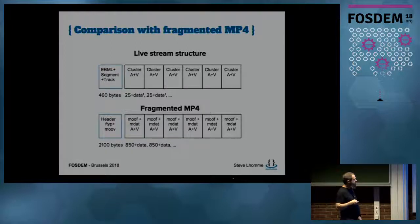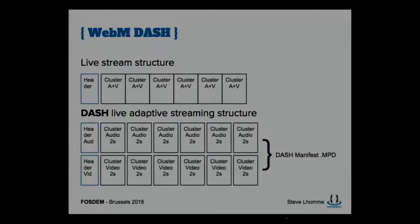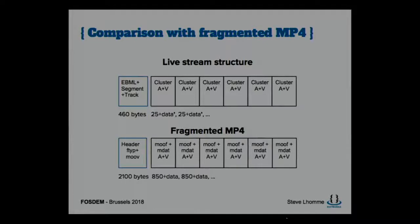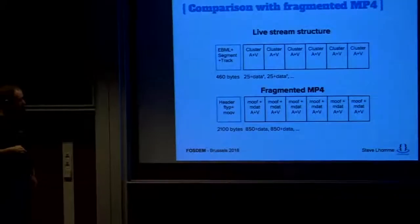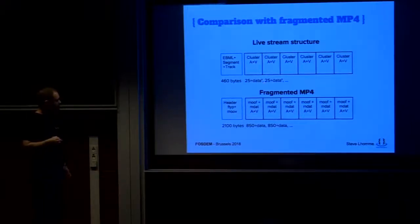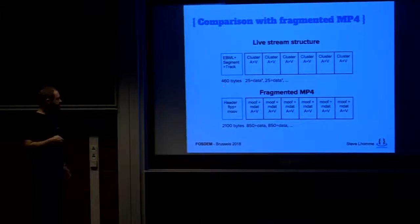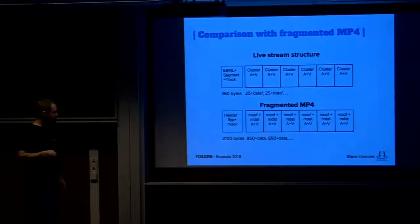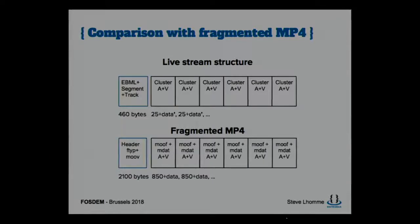The structure is always the same header part followed by audio and video clusters. I took a real fragmented MP4 file and converted it to Matroska to compare. The Matroska header was 460 bytes, and each cluster header was 25 bytes followed by the data. For fragmented MP4, the header was 2,100 bytes, and the equivalent of a cluster had 850 bytes of overhead before the data.